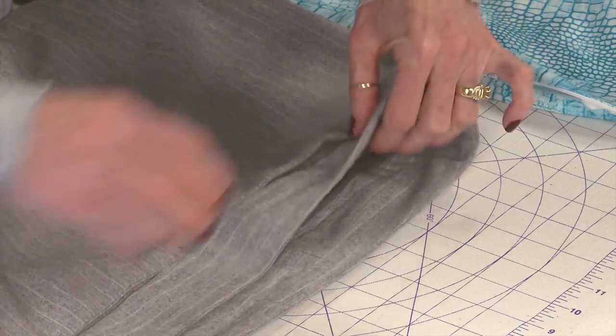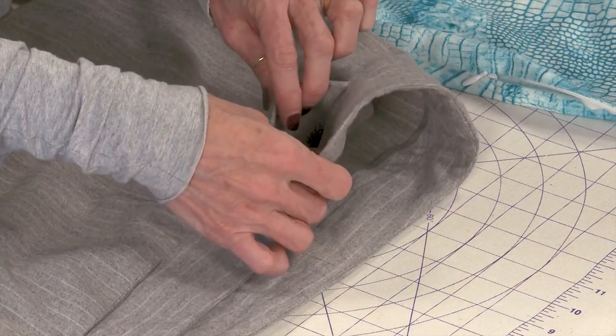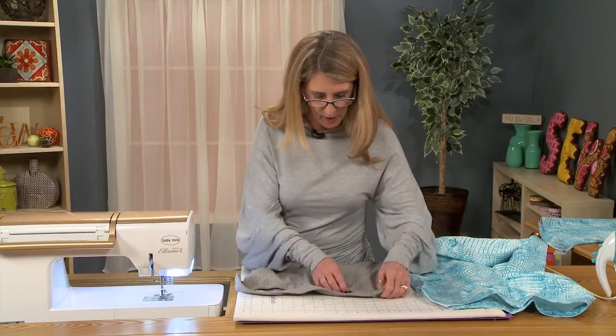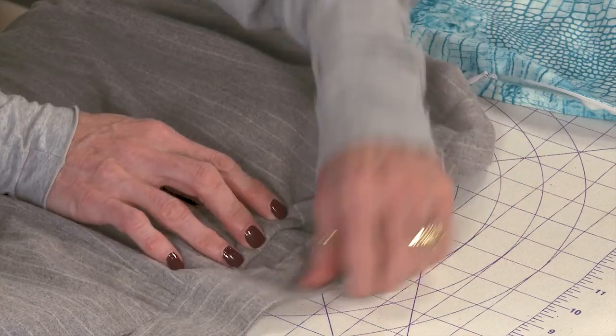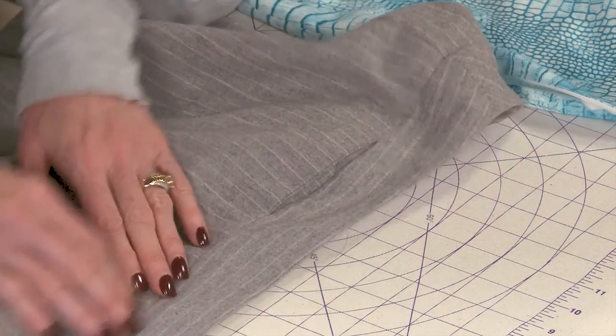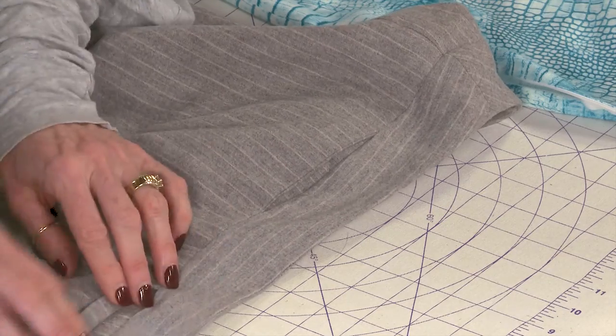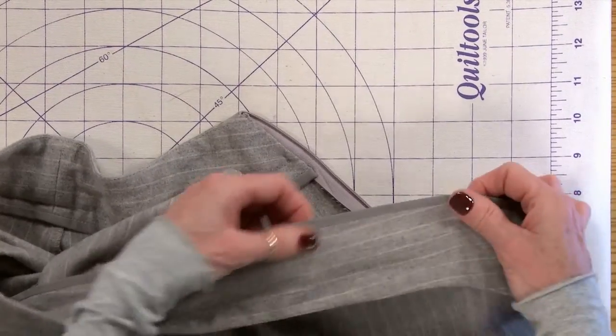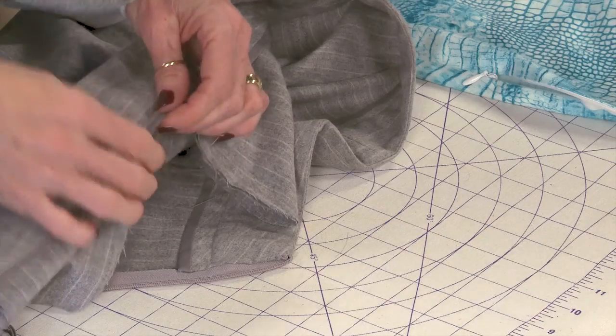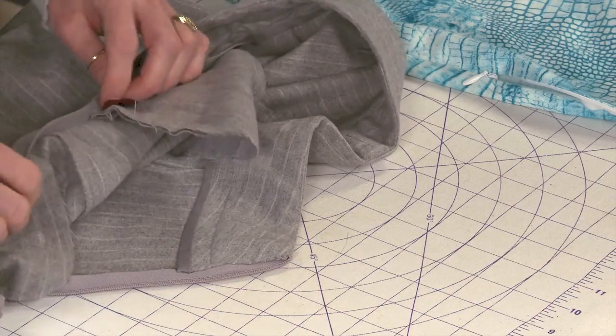Now the only problem here is when you get to the pocket, in order to stitch that facing down, you're going to have to hold your pocket back because you don't want to end up catching the edge of your pocket as you stitch down that facing. But it's really not that big a deal. It's a very easy thing to do. And then bind the edge. You can just buy a purchased seam binding from your local fabric store.